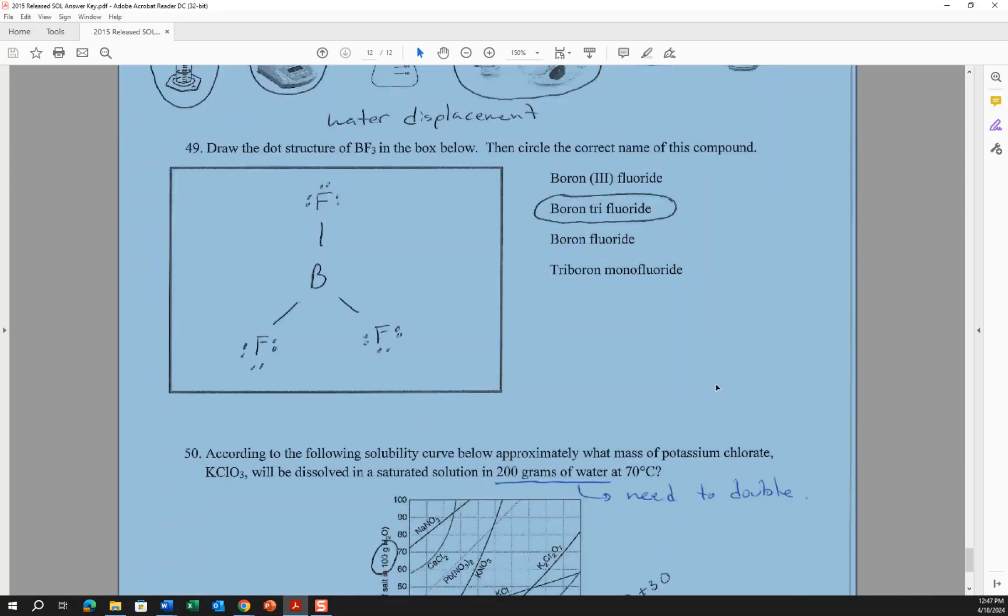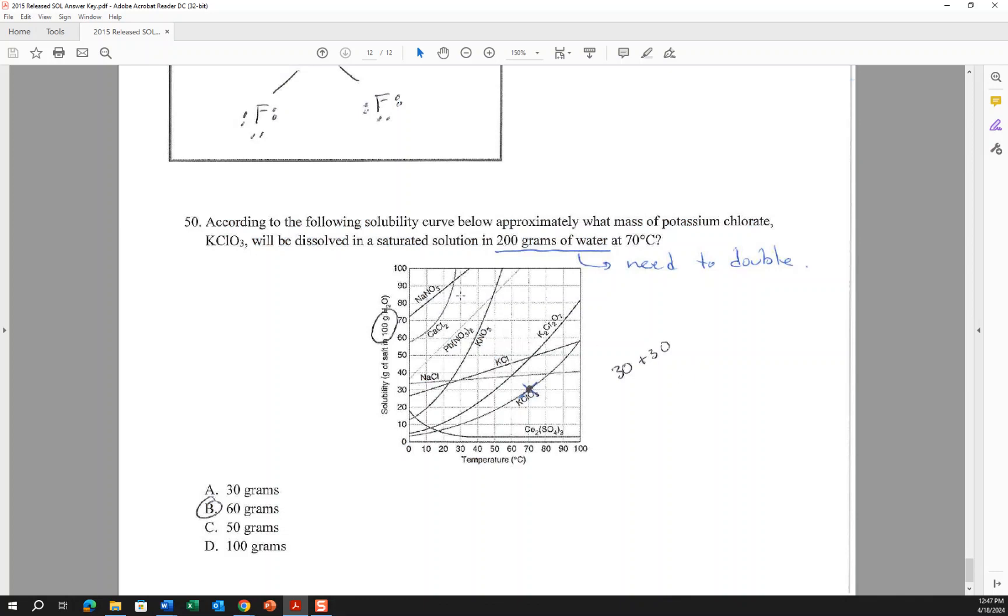The last question of the test: we have to interpret the solubility chart. Notice on the y-axis it says solubility - it's how many grams of the salt can dissolve in 100 grams of water. Notice the question is asking 200 grams of water at 70 degrees. We would go to 70 degrees, and it's asking about potassium chlorate. So potassium chlorate is here. 70 degrees potassium chlorate, so 30 grams. But that's 30 grams in 100 grams, so if you can dissolve 30 grams of potassium chlorate in 100 grams of water, how much can you dissolve if you double the water? You could double the chlorate, so not 30 grams, it would be 60 grams. If this had said 100 grams of water, then it would just be 30 grams. If it's at 300, it would be 90 grams. Just understand how to read that.